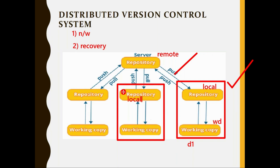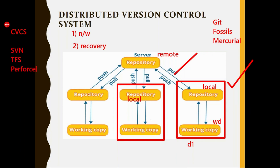This is the architecture of distributed version control systems, and the majority of modern DevOps projects use version control systems with this kind of architecture. Git falls under distributed version control systems — Git, Mercurial all come under distributed. Examples of centralized version control systems are SVN, TFS, and Perforce.